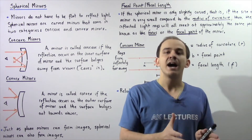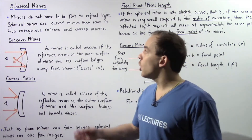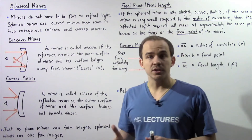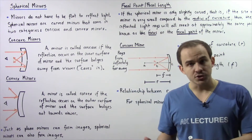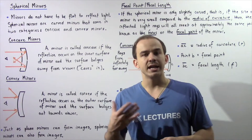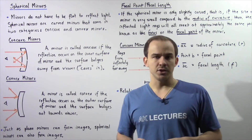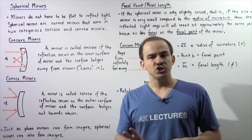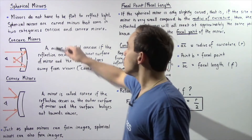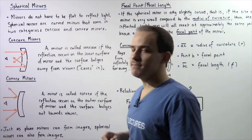A second type of mirror is known as a spherical mirror. Spherical mirrors are curved mirrors that are capable of reflecting light and forming images. Spherical mirrors come in two different categories: we have concave and convex mirrors.